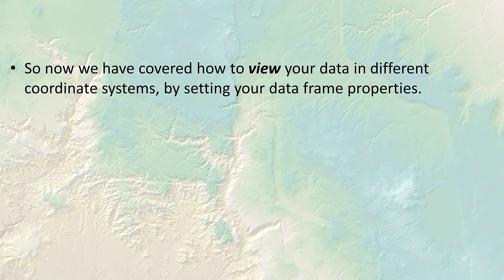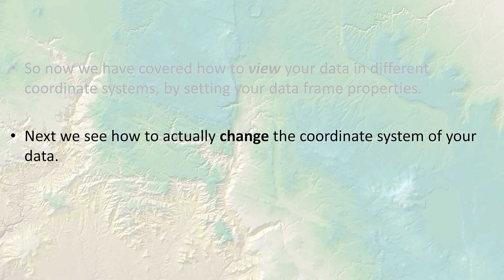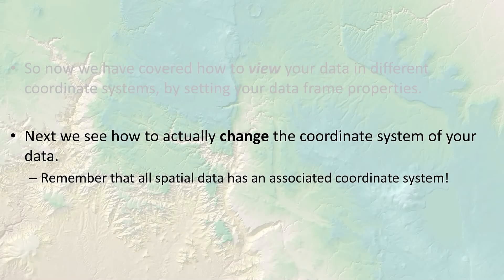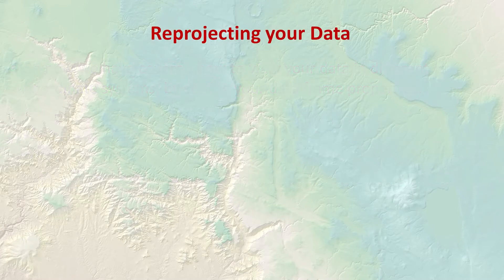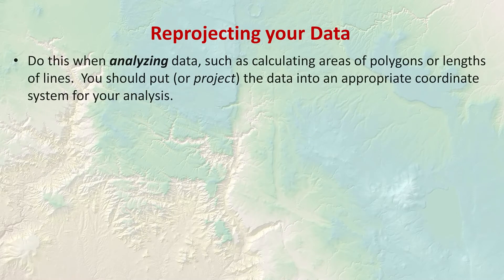We've been discussing how to set up ArcMap to show you the data correctly, to make it line up correctly in that data frame. That's all about viewing the data and making maps that look right. Next up we want to consider how to analyze data, and that means we need to be able to change the coordinate system of the data itself. This idea of re-projecting your data — you do this when you're analyzing data such as calculating areas of polygons or lengths of lines.